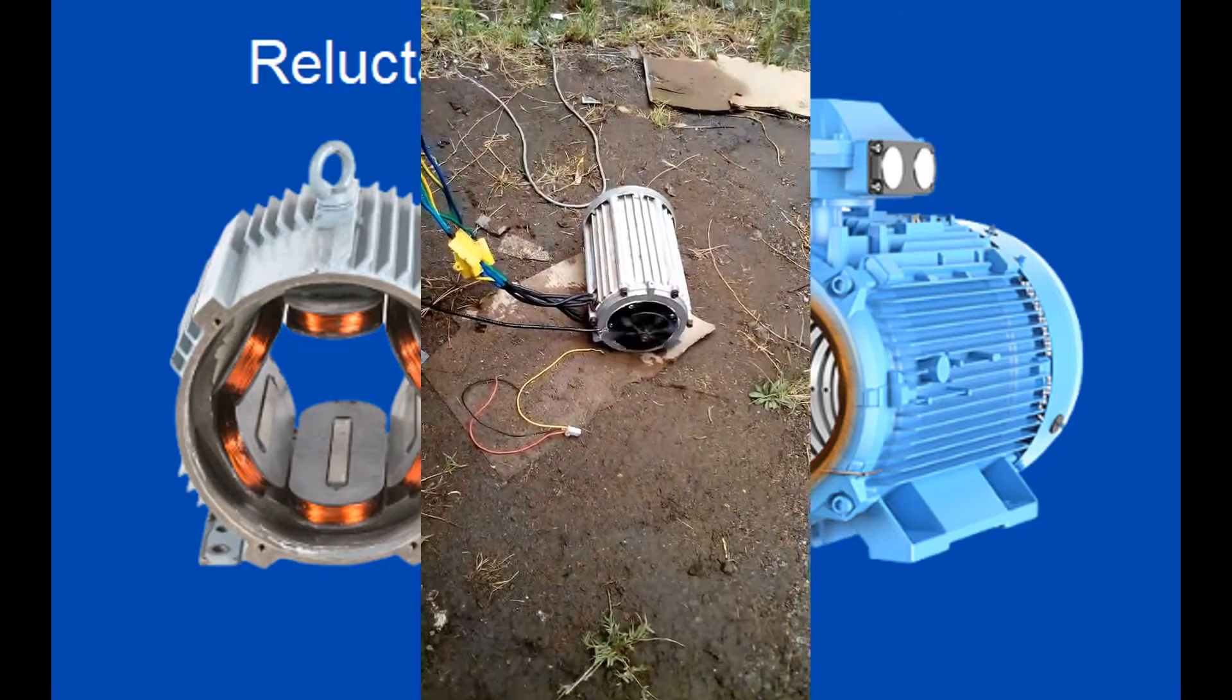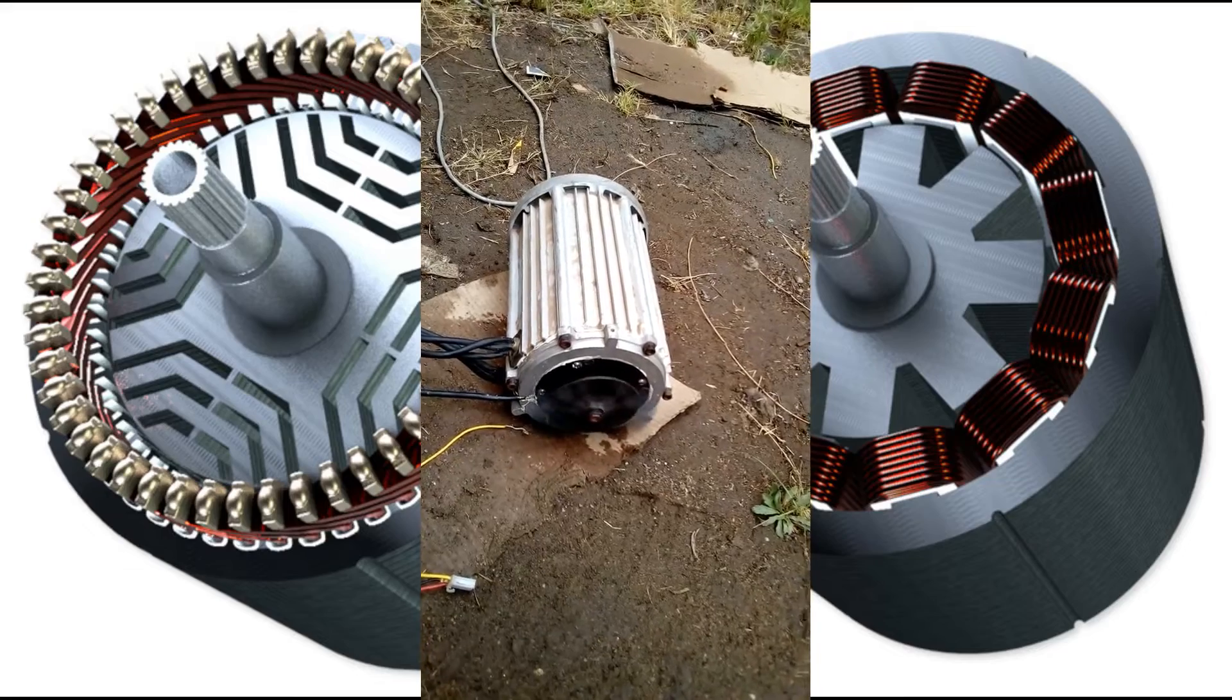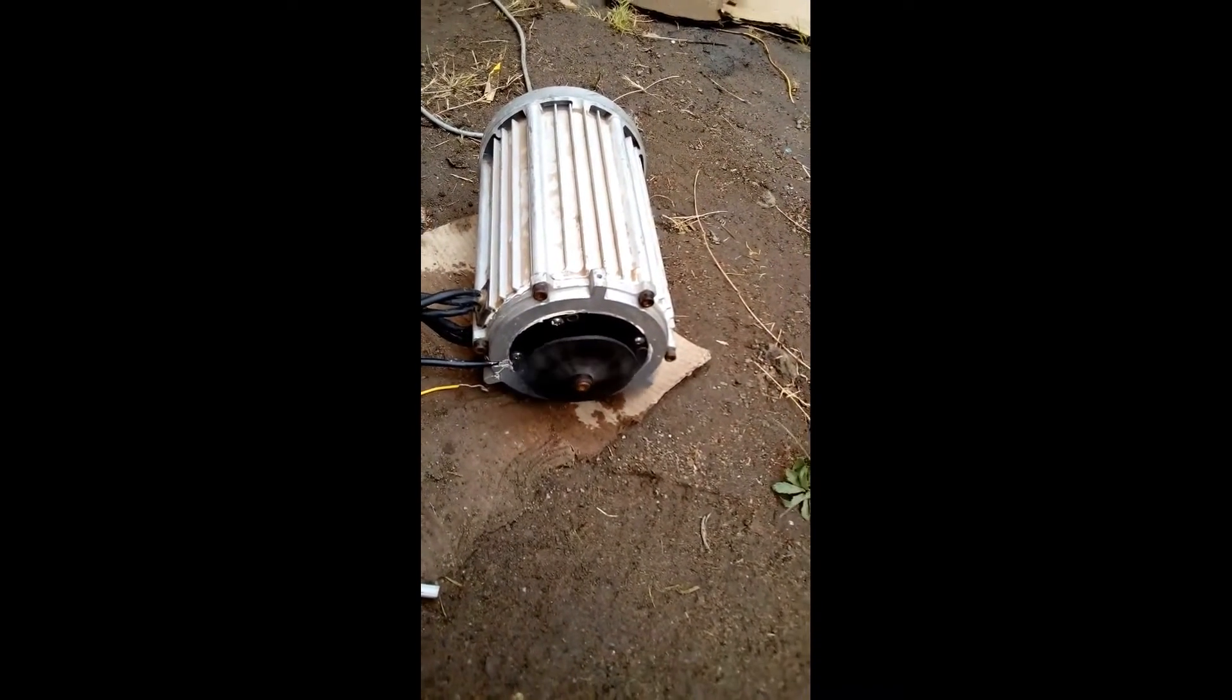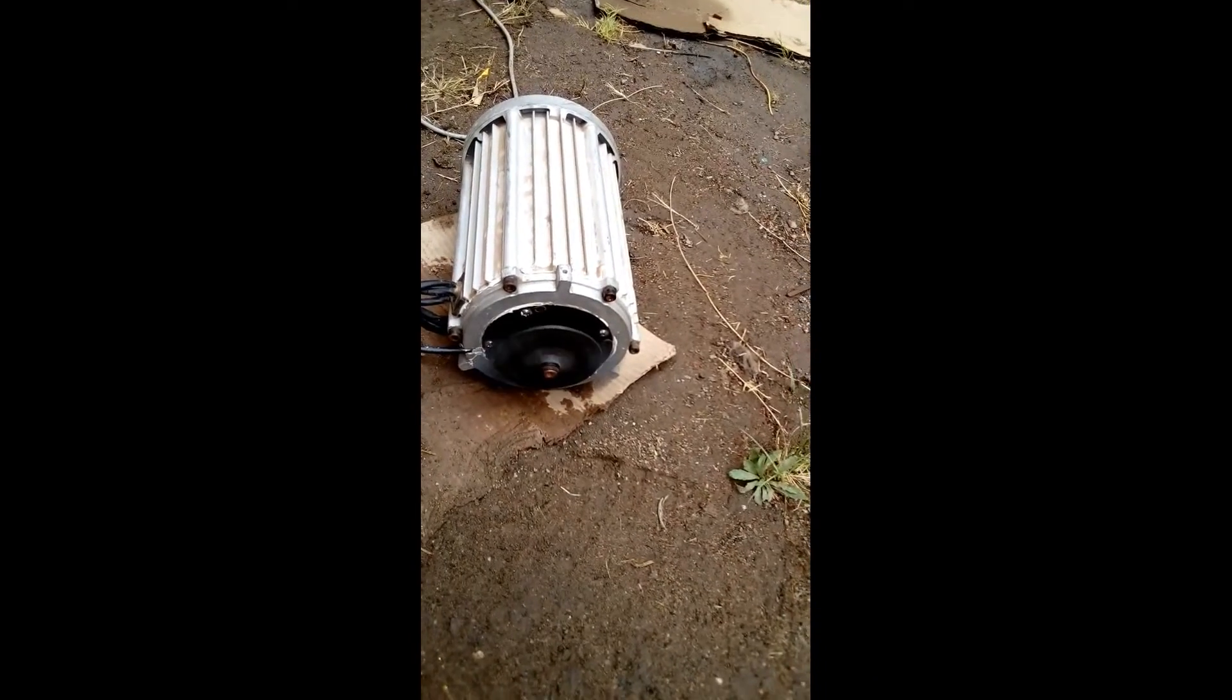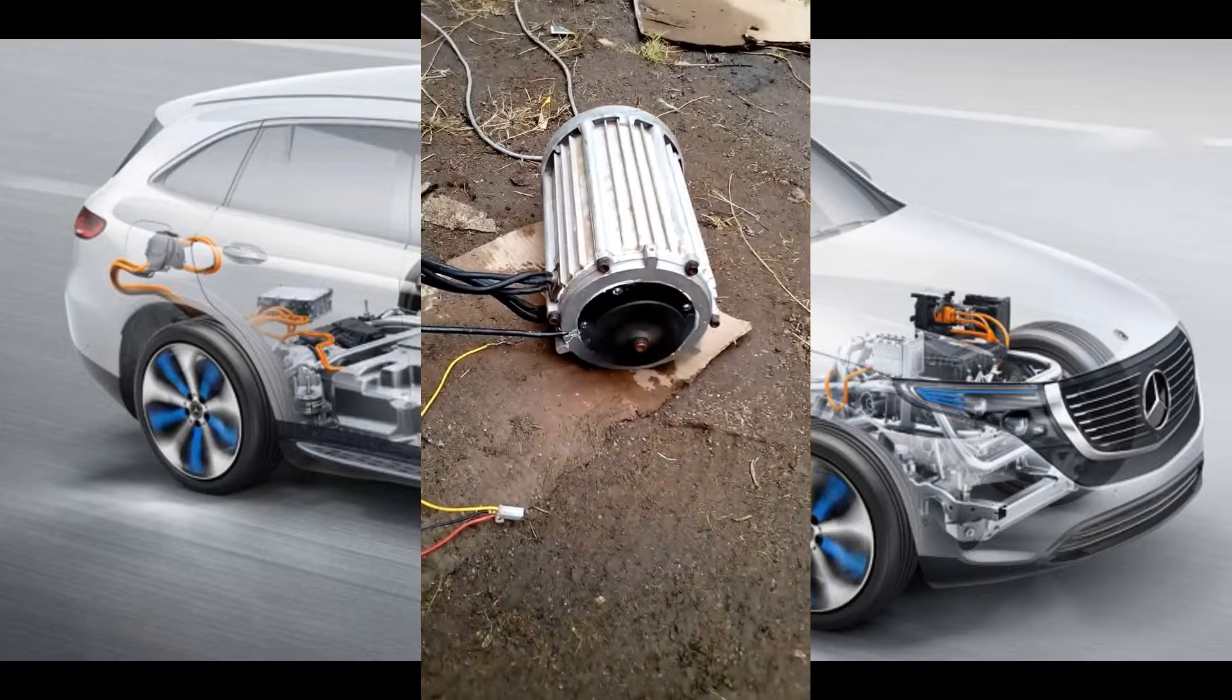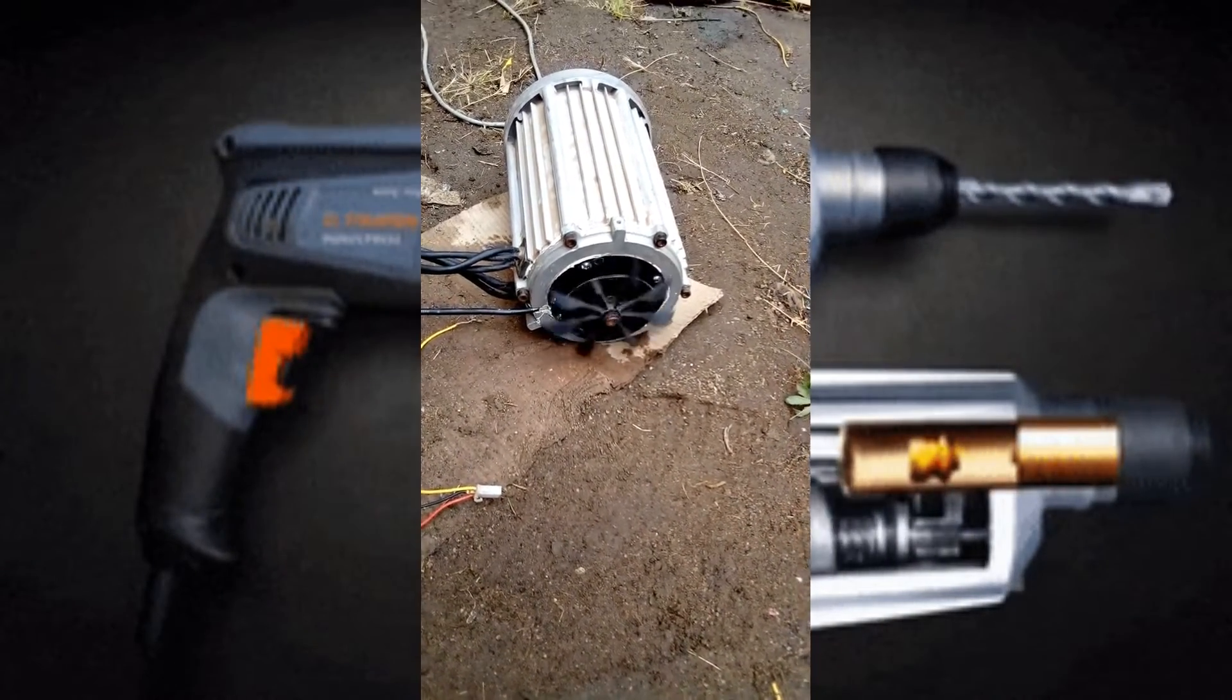Reluctance motors are used in signaling devices, control devices, automatic regulators, recording devices, clocks, teleprinters, gramophones, analog electric meters, electric vehicles, and power tools like drill lathes, band saws and presses. What are reluctance motors?